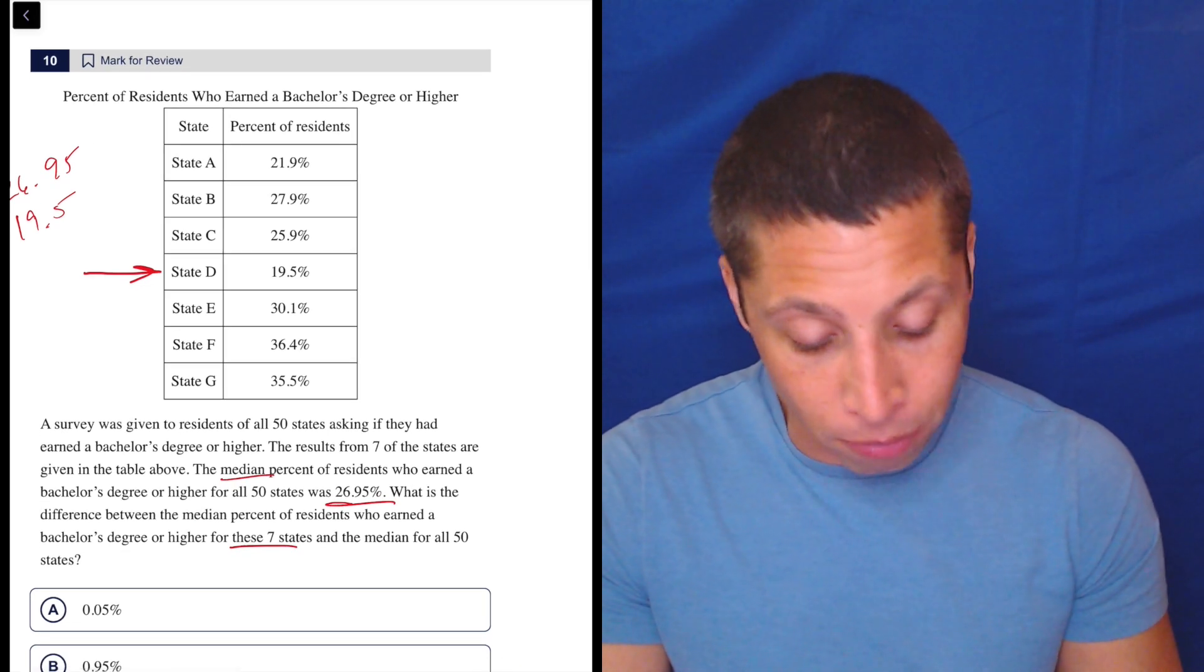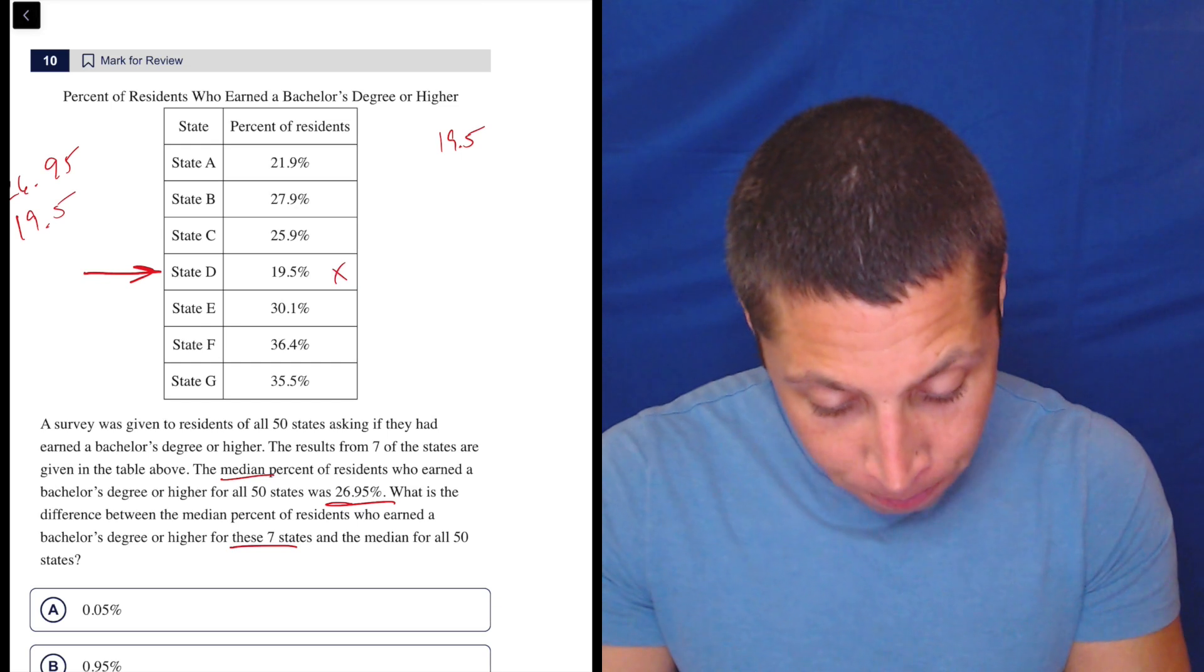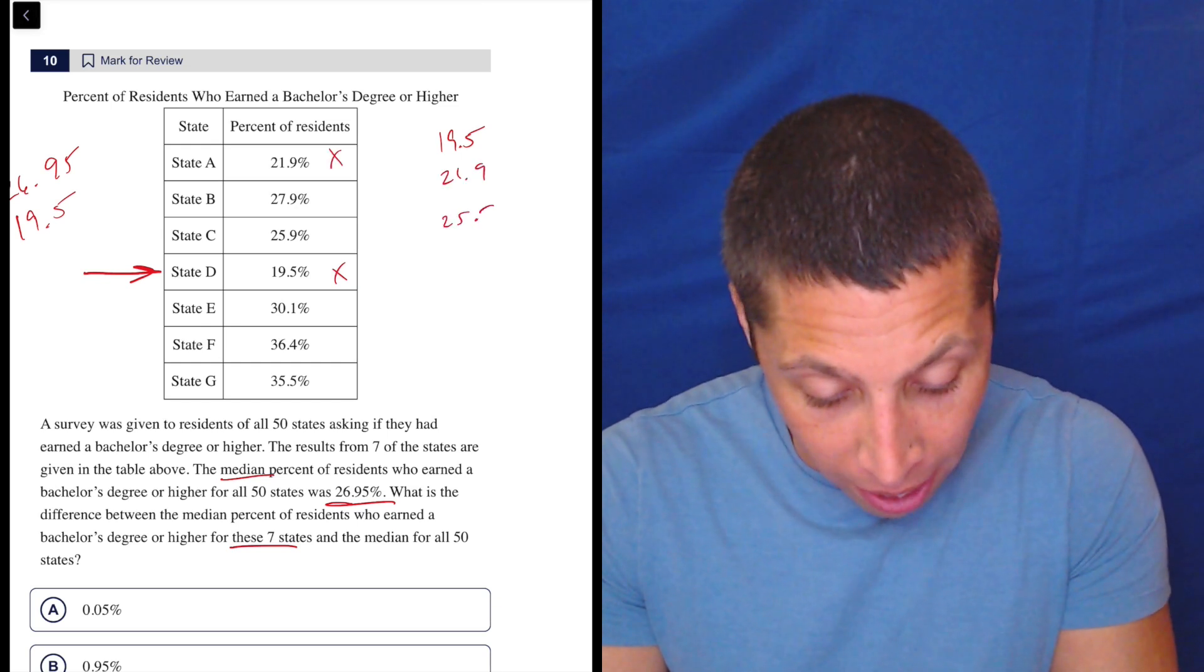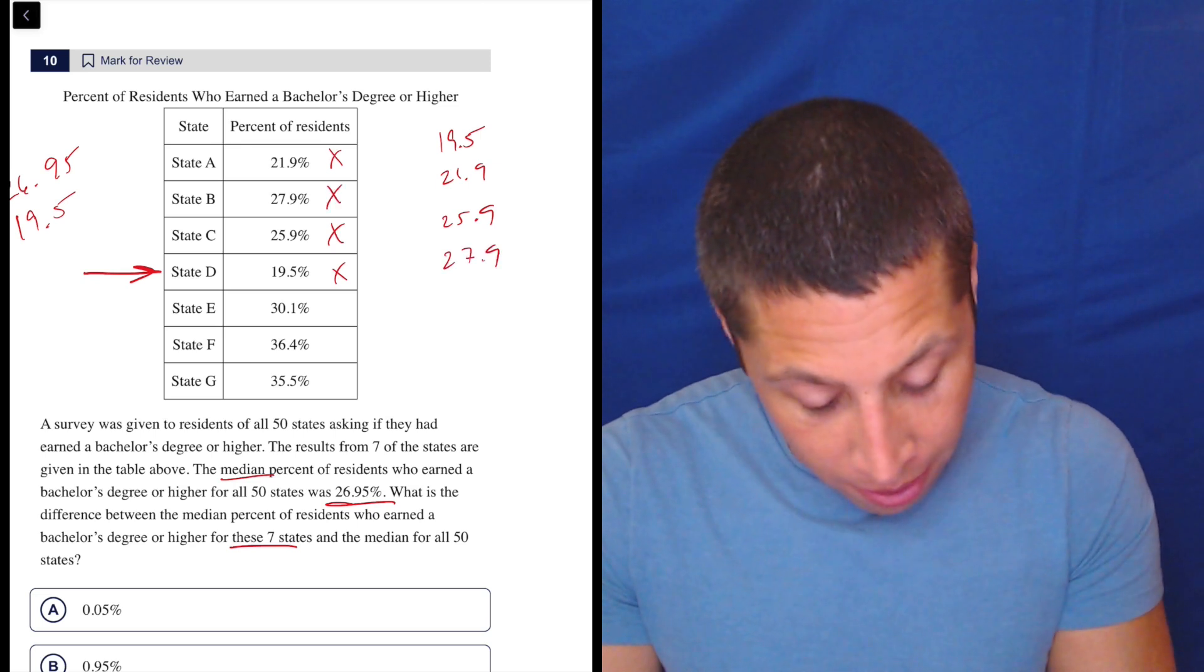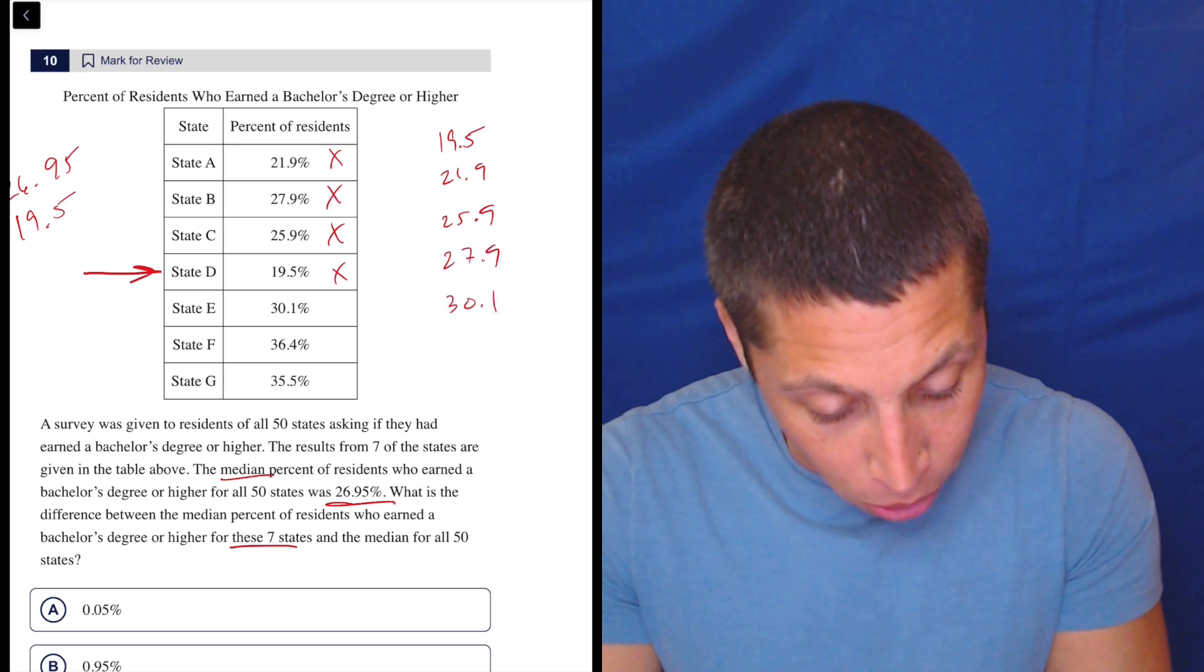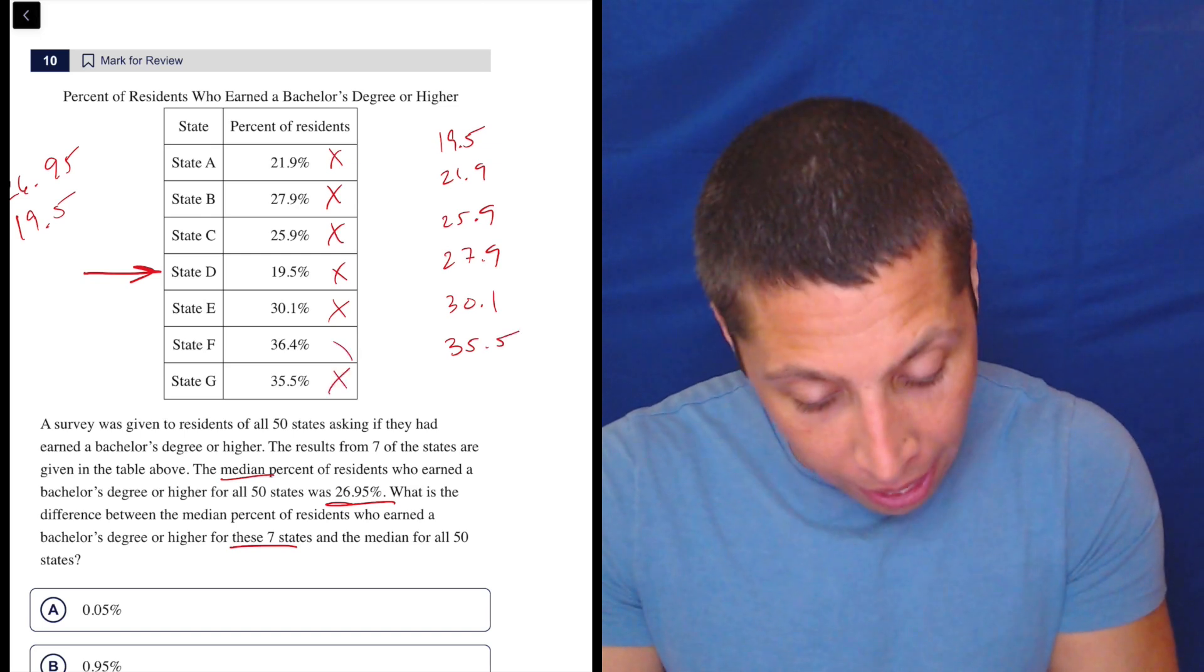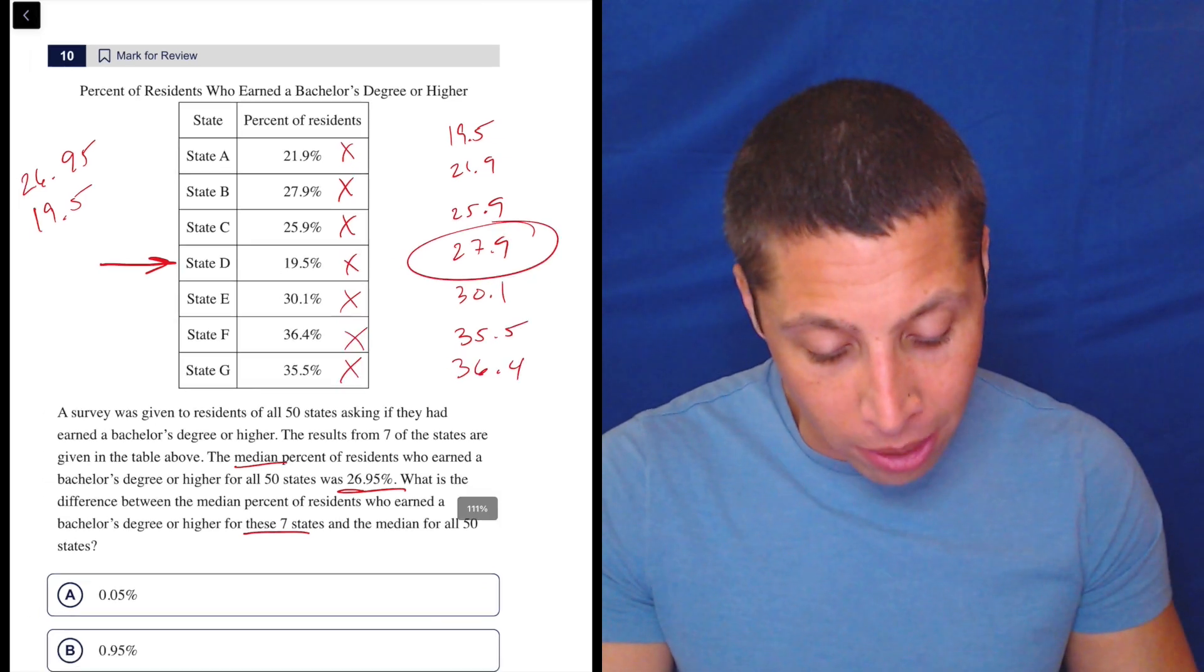Basically, let's just look and kind of order them ourselves. So I see 19.5. Let's get rid of that. I see 21.9. Get rid of that. I see 25.9. Get rid of that. I see 27.9. Then I think we're good, but let's just continue. 30.1, 35.5, and 36.4. So the real middle is 27.9.